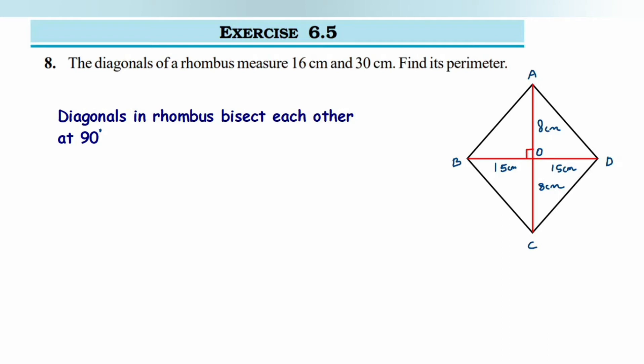The eighth question is: The diagonals of a rhombus measure 16 centimeter and 30 centimeter, find its perimeter. So here I have drawn a rhombus ABCD. In a rhombus, diagonals bisect each other at 90 degrees. When they intersect, they make a 90 degree angle and they are bisecting.